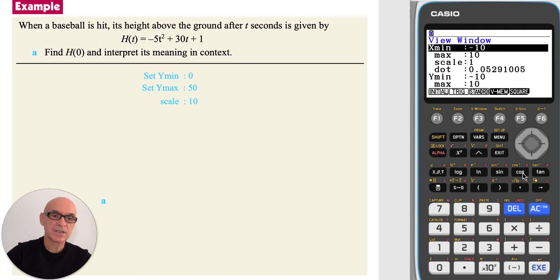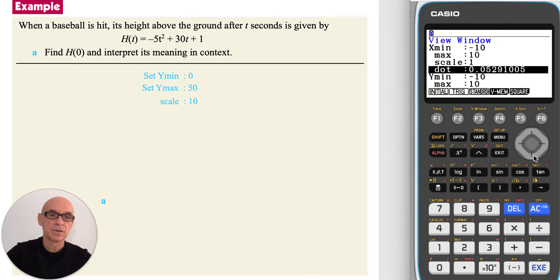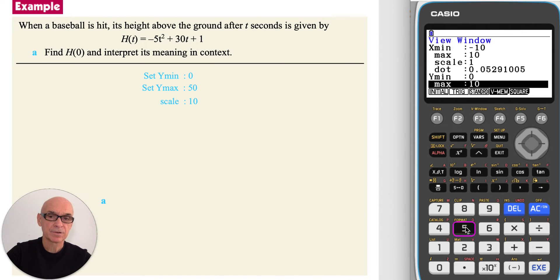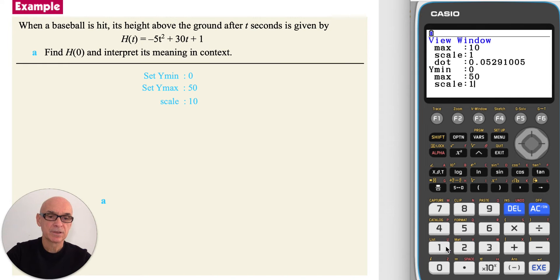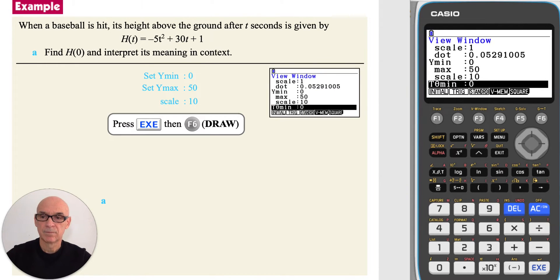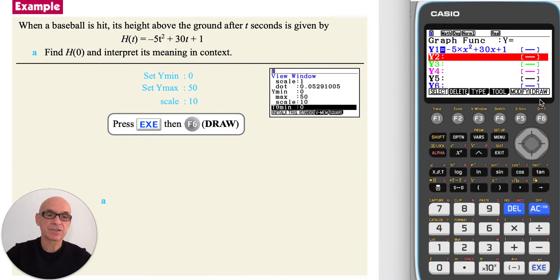press f3 view window to adjust the window. And we can set ymin to 0, ymax to 50, and yscale to 10. Pressing execute, and then f6 to draw the graph again.